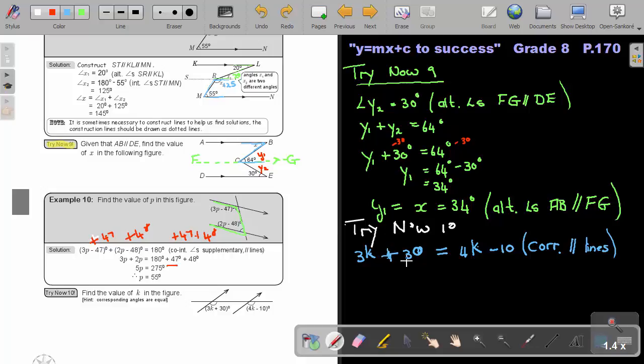This is a plus. To get rid of this positive 30, I subtract 30 on both sides. So, this will cancel. I have 3K equals 4K minus 10 minus 30. Now, I want to cancel the positive 4K. That will be negative 4K. I do it to that side also, negative 4K.